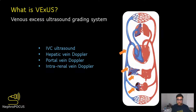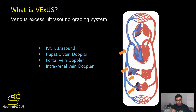So what VEXUS, or the Venous Excess Ultrasound grading system, lets us do is to quantify organ congestion or venous congestion. It involves performing hepatic vein, portal vein, and intrarenal venous Doppler, in addition to inferior vena cava ultrasound, which generally allows us to estimate right atrial pressure.